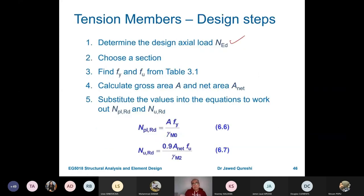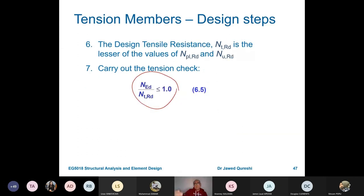Now I will come to the design. Work out the axial load and choose a cross-section. Determine Fy and Fu from Table 3.1, then calculate A or Anet, and then work out NTRD from these two formulas and use the lesser of these two. NED over NTRD means that applied versus the capacity should be less than or equal to 1.